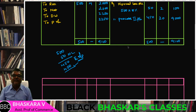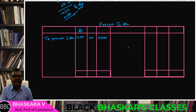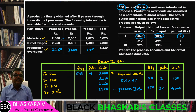Process 1 account: transfer of 450 units at ₹20 = ₹9,000 to Process 2 account. Now we prepare Process 2 account with columns for quantity, rate, and amount on both debit and credit sides. Input includes direct material, direct labor, and direct production overhead.